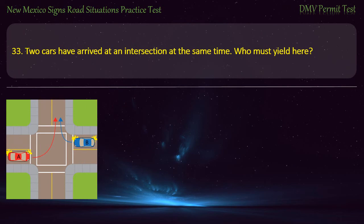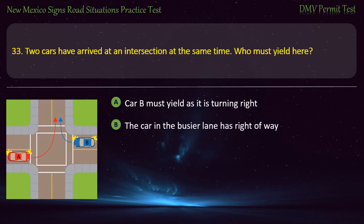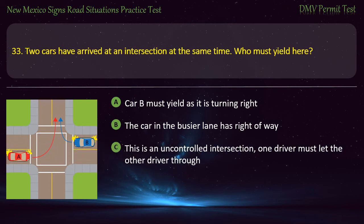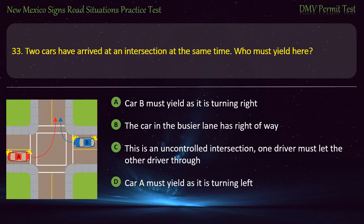Question 33. Two cars have arrived at an intersection at the same time. Who must yield here? Options: Car B must yield as it is turning right; the car in the busier lane has right-of-way; one driver must let the other through; or Car A must yield as it is turning left. Answer: Car A must yield as it is turning left.